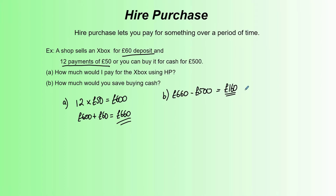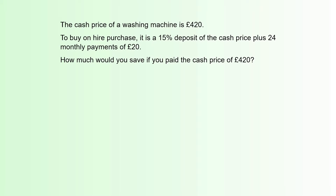Let's look at another example — a little bit more complicated as it takes percentages into account. The cash price of a washing machine is £420. To buy on hire purchase it's a 15% deposit of the cash price plus 24 payments of £20. How much would you save if you paid the cash price of £420? It's the same idea but more complicated because rather than being told the deposit, we have to calculate it.